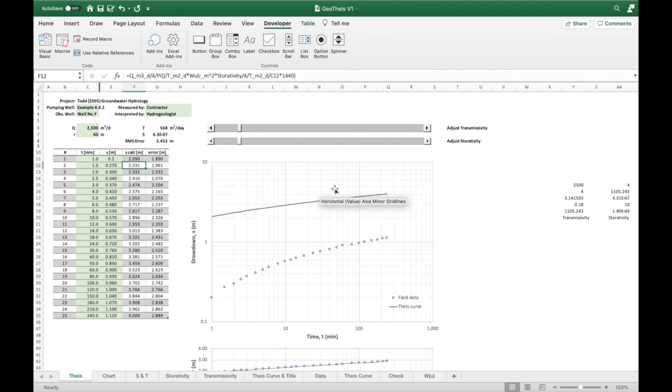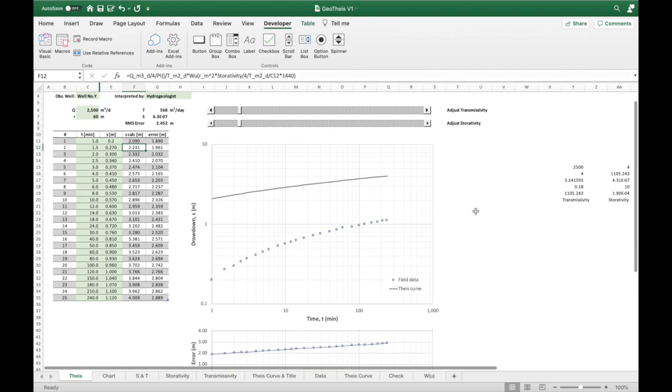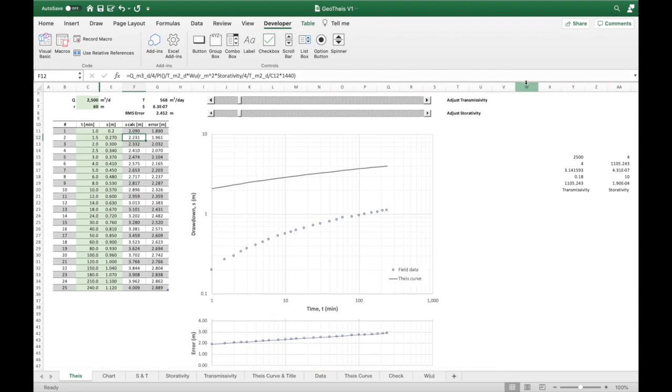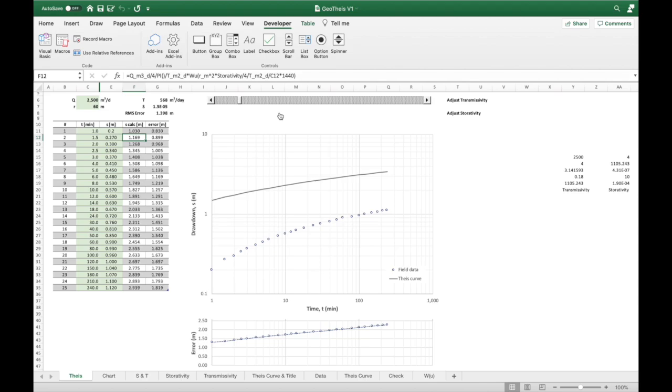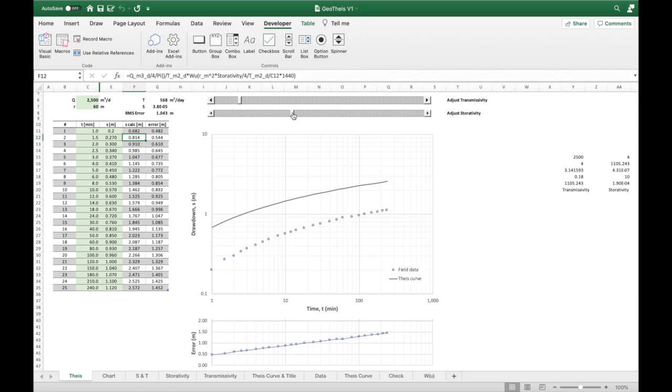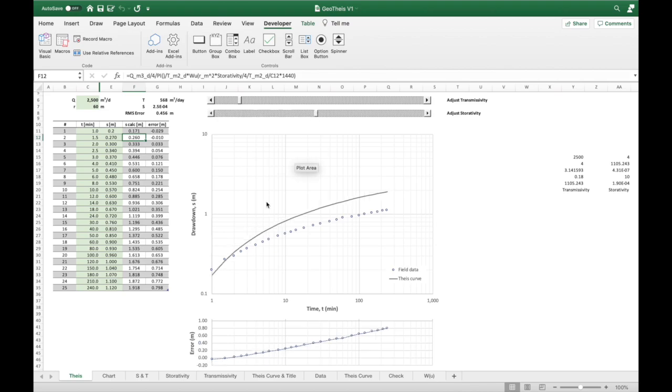So let's do our interpretation using Excel. The first thing we need to do is we want to bring our Theis curve down towards the data, which means we want to reduce the drawdown, calculate the drawdown, which is too high at the moment, and the way to do that is we're going to increase the storativity. That drops the Theis curve, and you can see now that it is coming down, but the Theis curve is steeper than the data. So now is the time to change the transmissivity. We increase the transmissivity to flatten the curve.